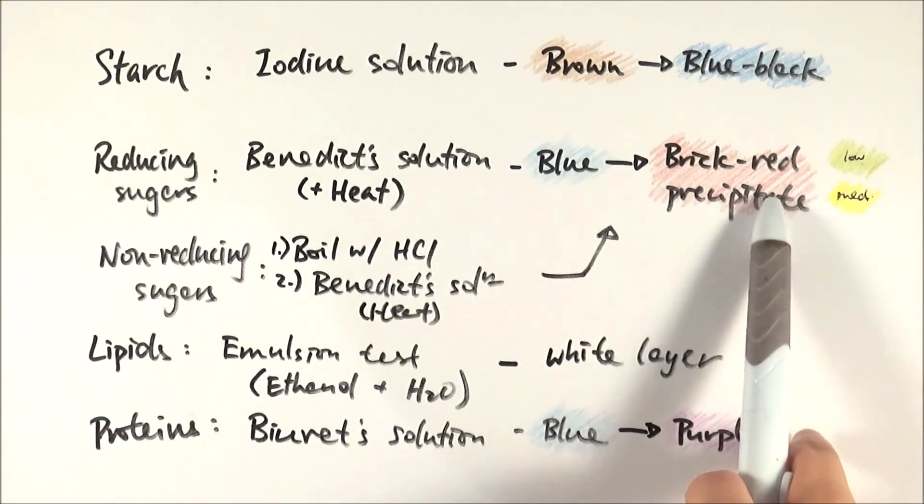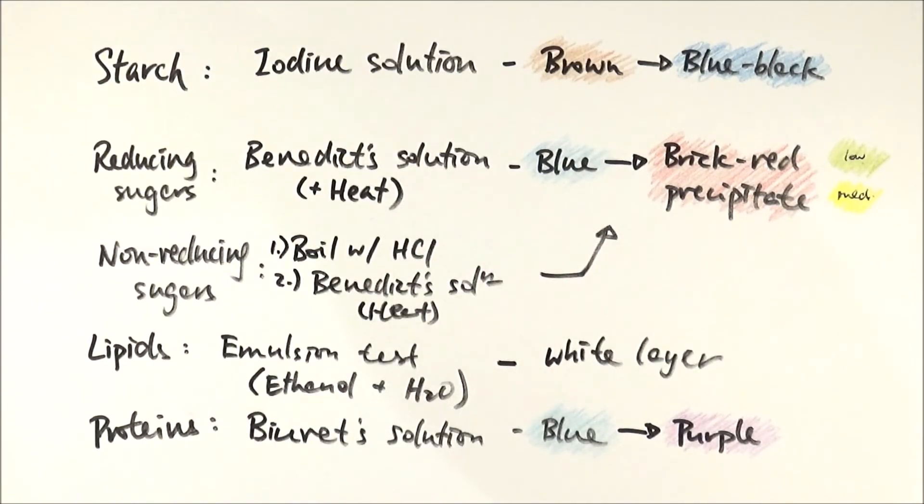For non-reducing sugars such as sucrose, you boil it with hydrochloric acid first, then repeat the Benedict solution test with heating, producing the same results as reducing sugars. To test for lipids, mix your sample with ethanol then water—the emulsion test—and a positive result shows a white layer on top. To test for proteins, use Biuret solution, which is a clear blue solution that turns from blue to purple or lilac. Those are the tests for different biological molecules.